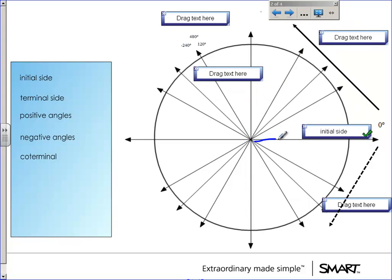So this right here would be the initial side of an angle. We're going to call that on the positive x-axis, call that the initial side.